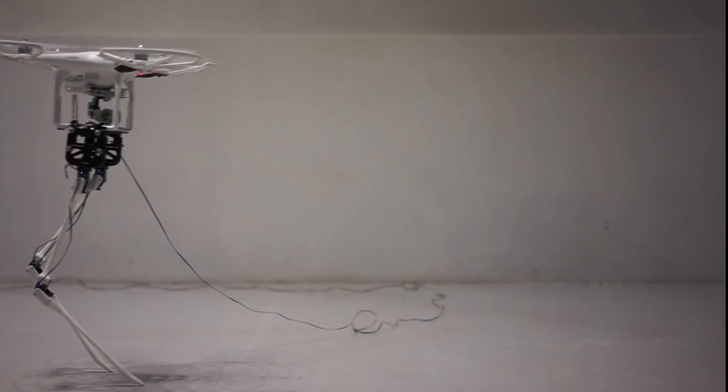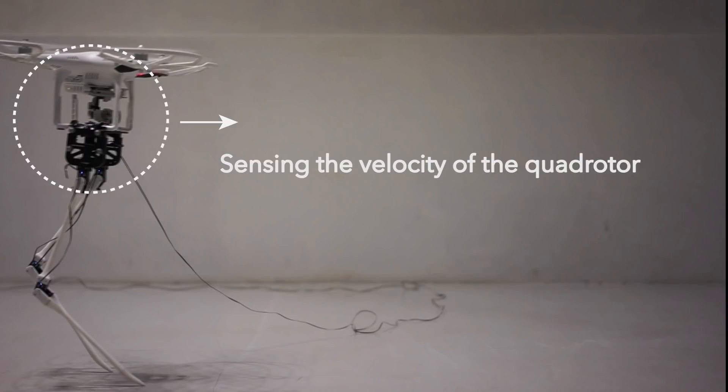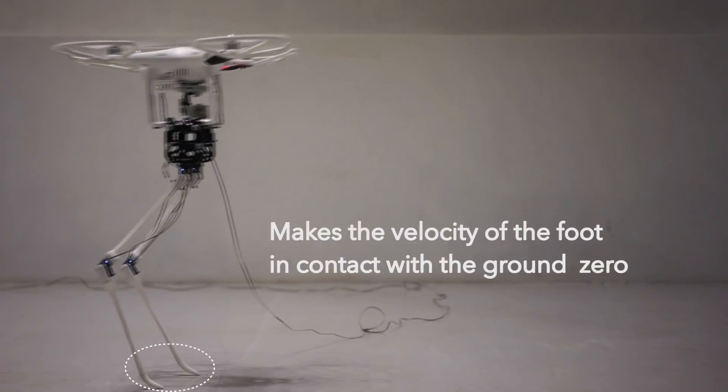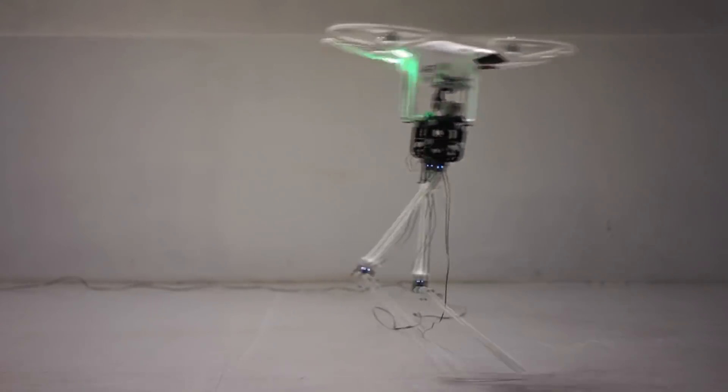We present Aerial Biped, a biped robot using a quadrotor. Aerial Biped takes as input the velocity of the quadrotor and automatically produces the leg motion which makes the velocity of the foot zero. This robot can generate a gait according to the quadrotor movement.